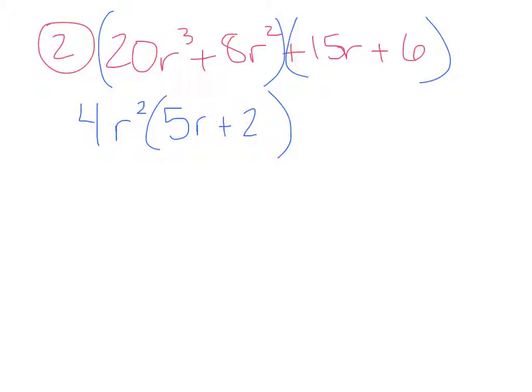Now look at the second set of parentheses. 15r + 6, what comes out of both? Well, the positive 3 does. And when you divide that, you get 5r + 2.